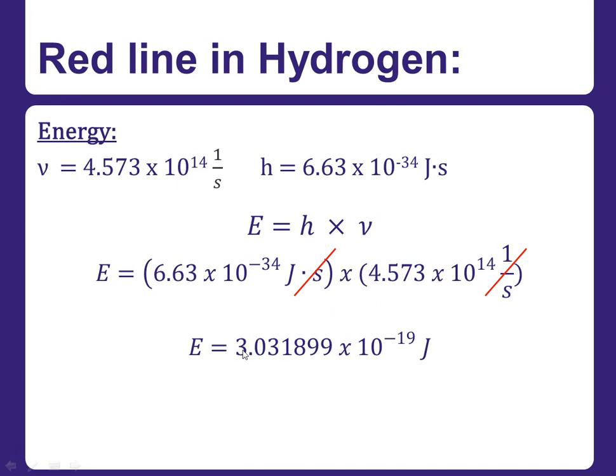So we're going to have to round to 1, 2, 3, 4 significant digits, which is the 1. And since the number immediately following it is an 8, we're going to have to round it up to a 2, so that means our energy is going to be 3.032 times 10 to the negative 19th joules. This number has 4 significant figures and we're all good to go.